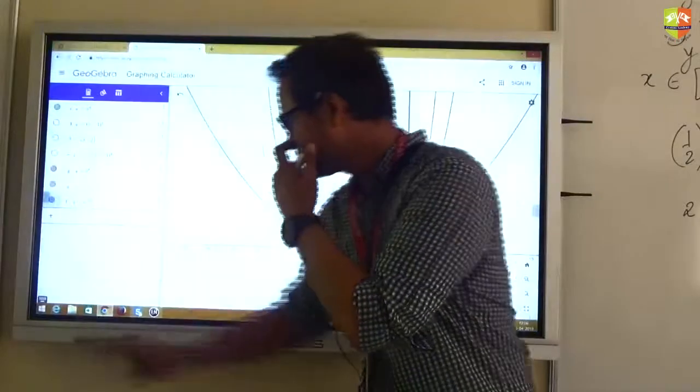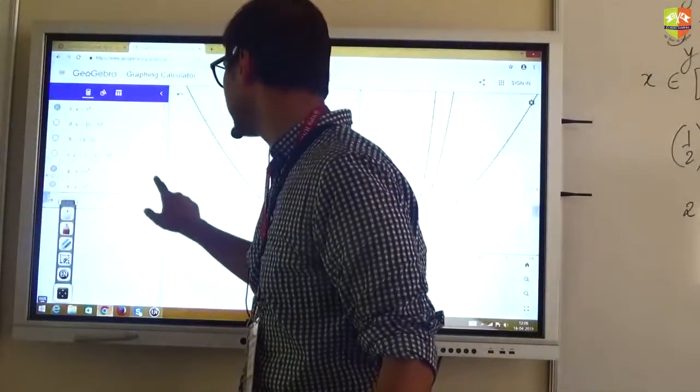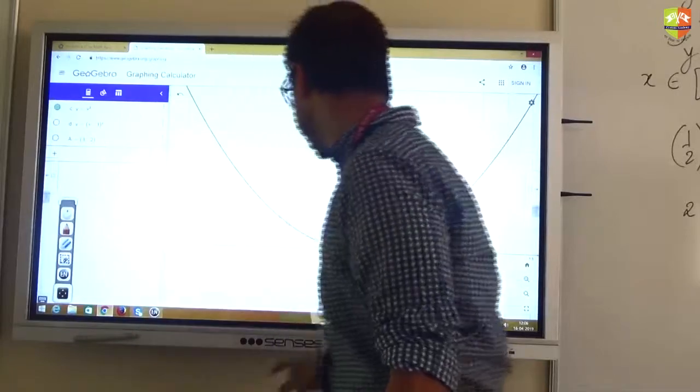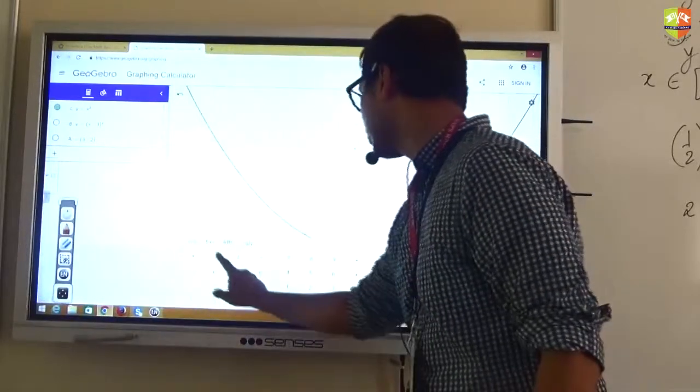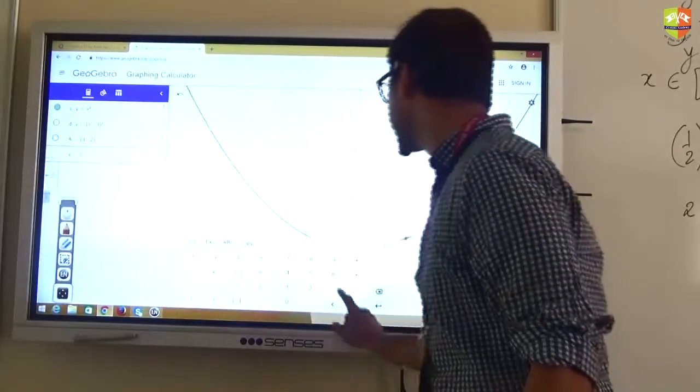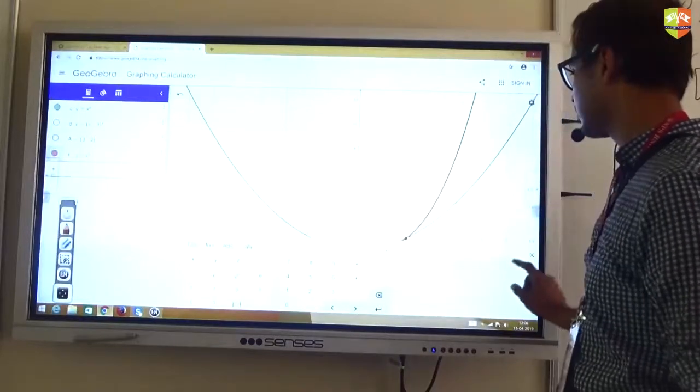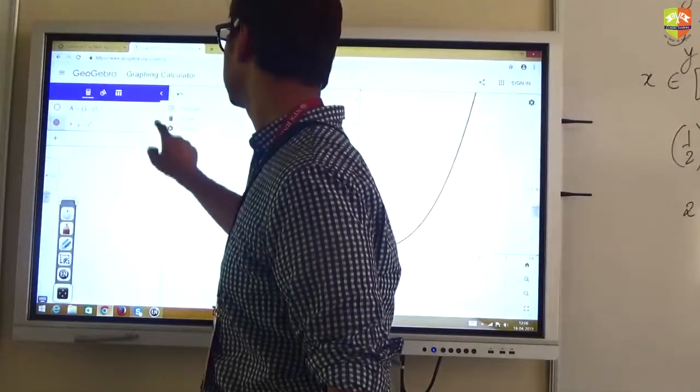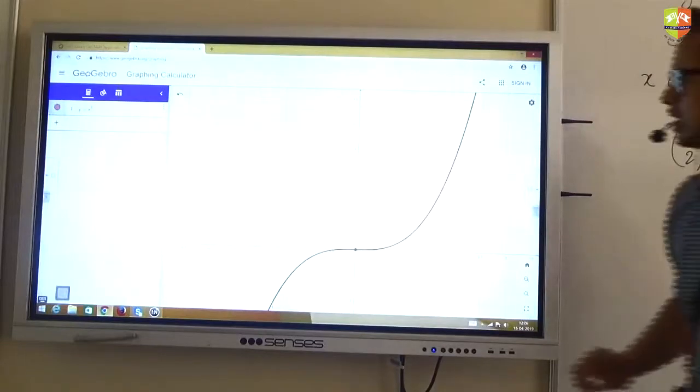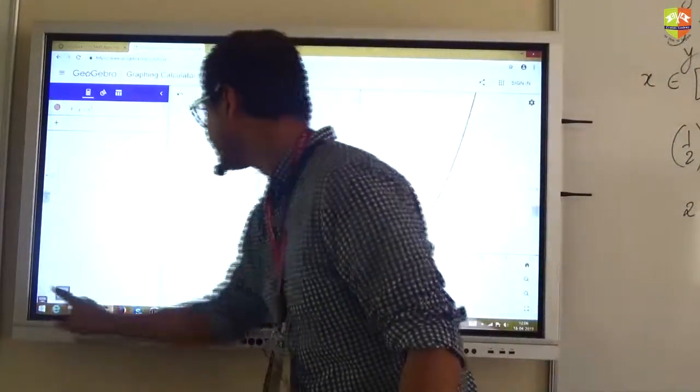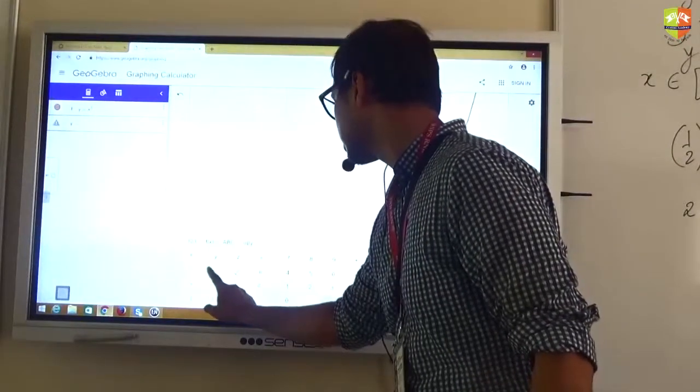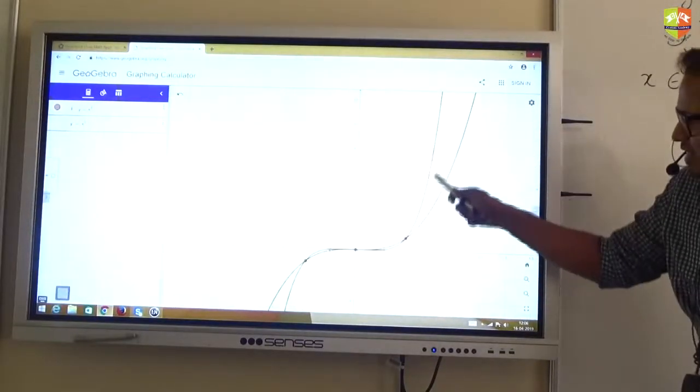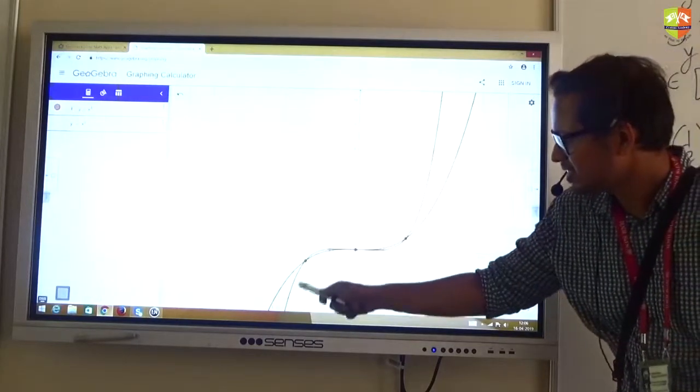I'll just delete all these unwanted ones. Okay. So let's say in the graph of x cube first I will know. Y is equal to x cube. Y is equal to x to the power of 5. Okay. This is the graph of x cube. Now, if I draw the graph of x to the power of 5. See what is happening. Do you see that? This graph is the graph of x to the power of 5.